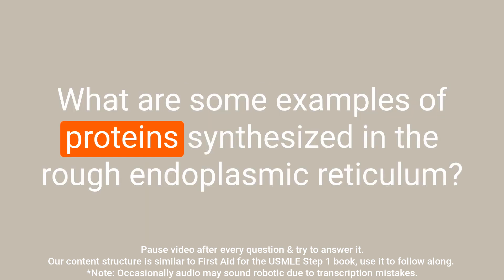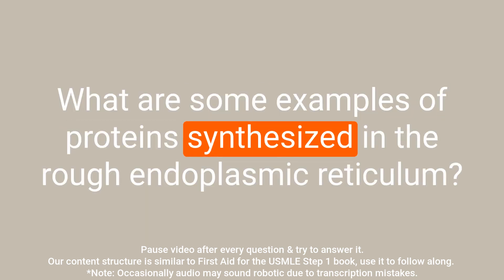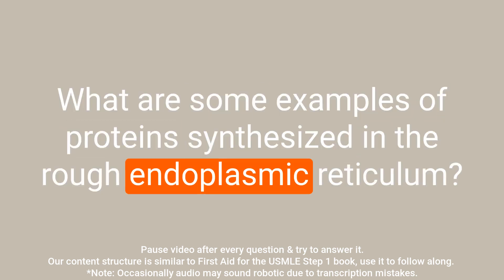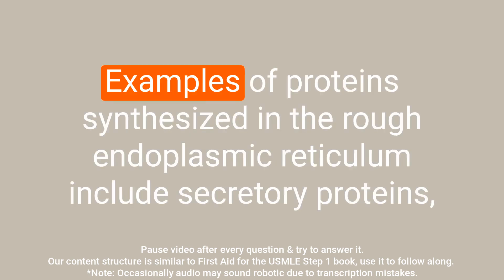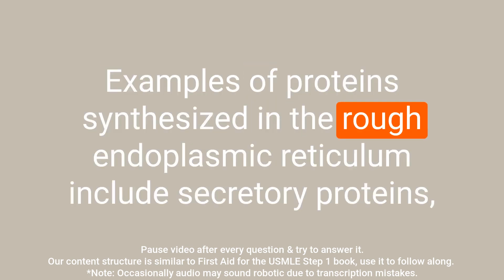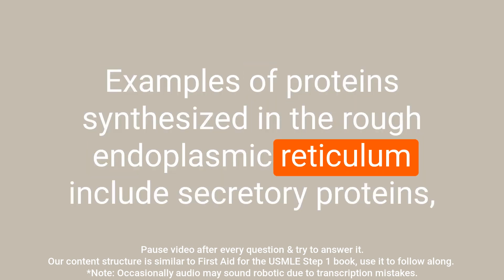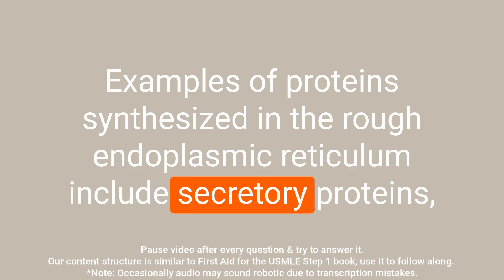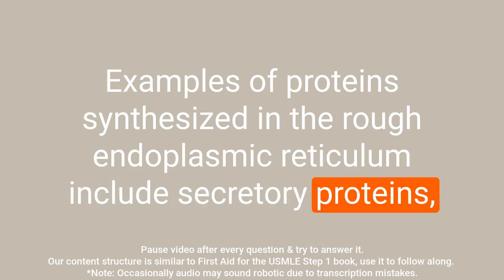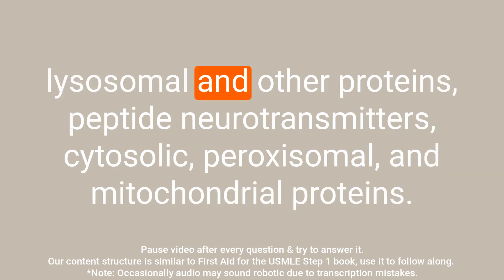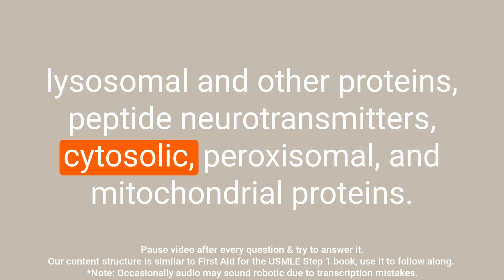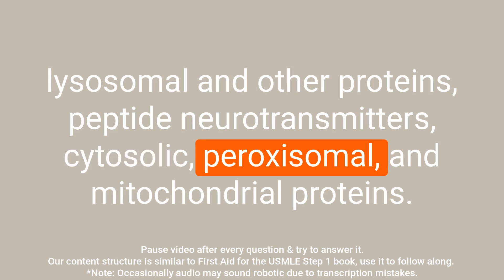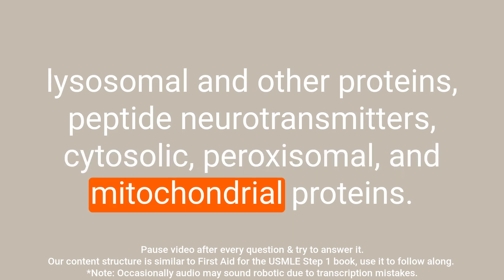Question: What are some examples of proteins synthesized in the rough endoplasmic reticulum? Answer: Examples include secretory proteins, lysosomal and other proteins, peptide neurotransmitters, and cytosolic, peroxisomal, and mitochondrial proteins.